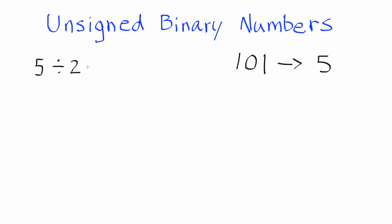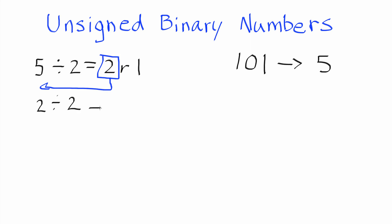Basically what we do is we write our answer in terms of a remainder. So 5 divided by 2 is equal to 2 with a remainder of 1. Then the next step in the process — we just continue and repeat this over and over again — we take the number that's in this position and we move it to the front, and then we divide that by 2 again. In this case our number happened to be 2, so we just put the 2 out front and keep on dividing by 2.